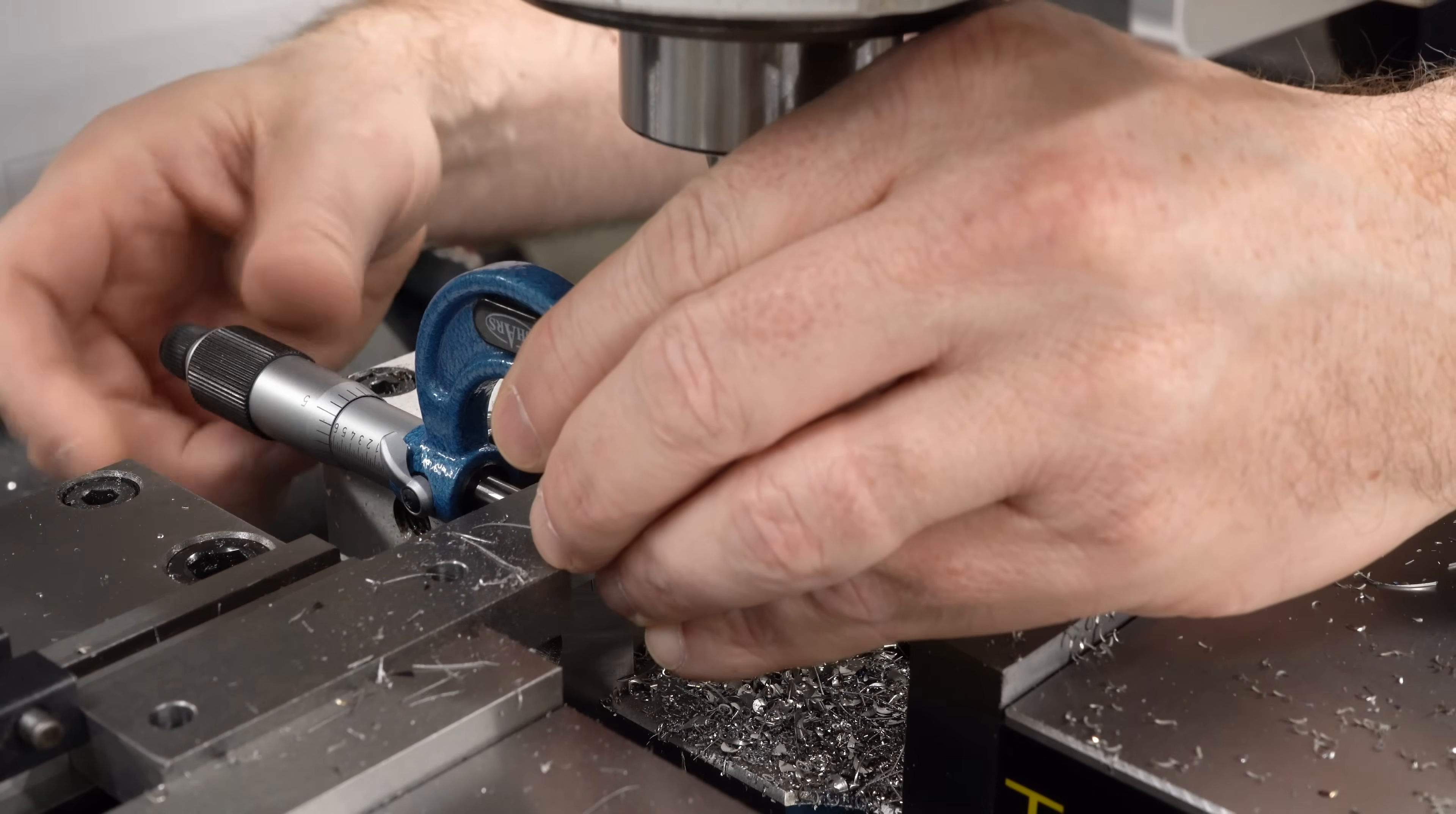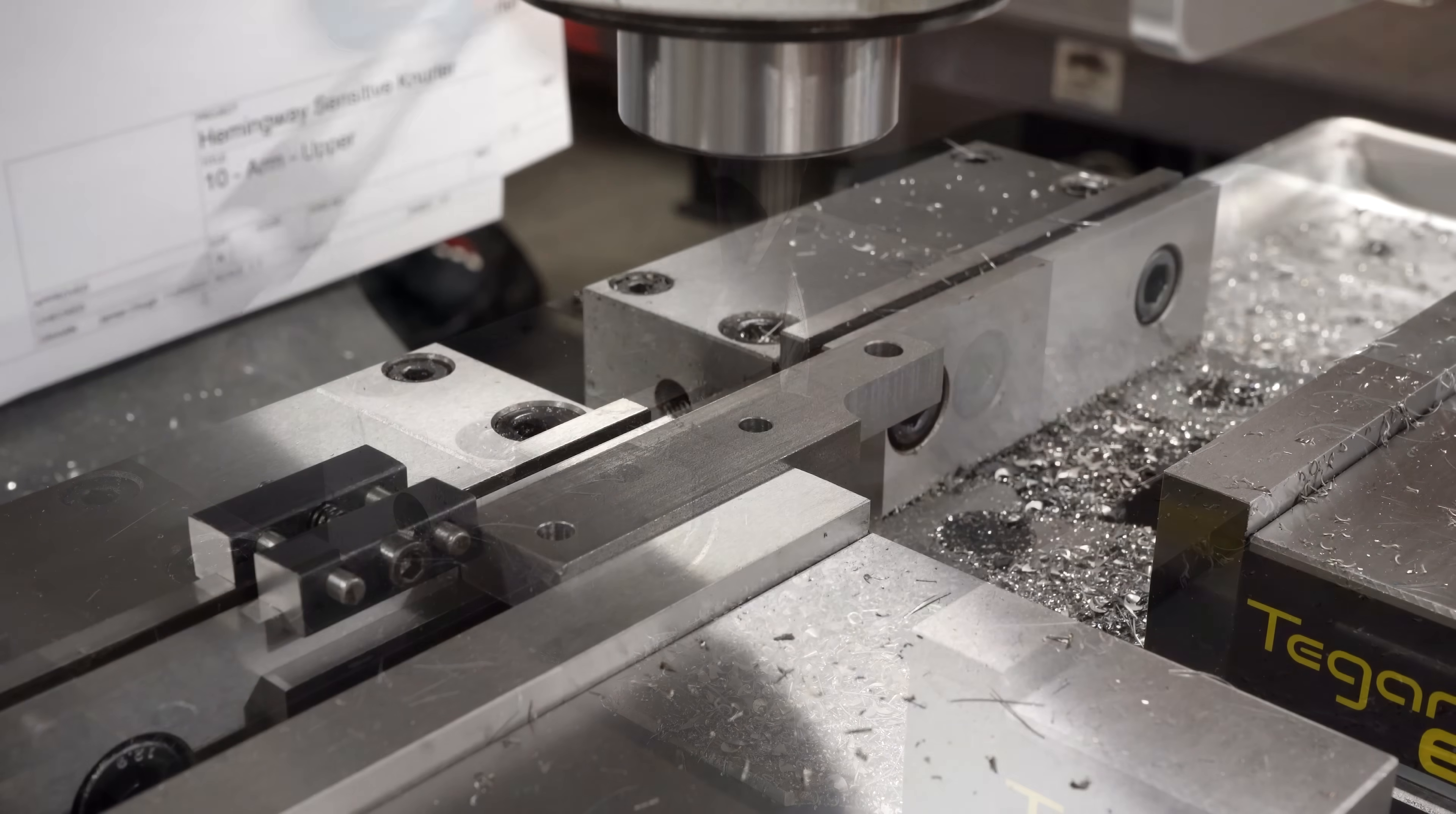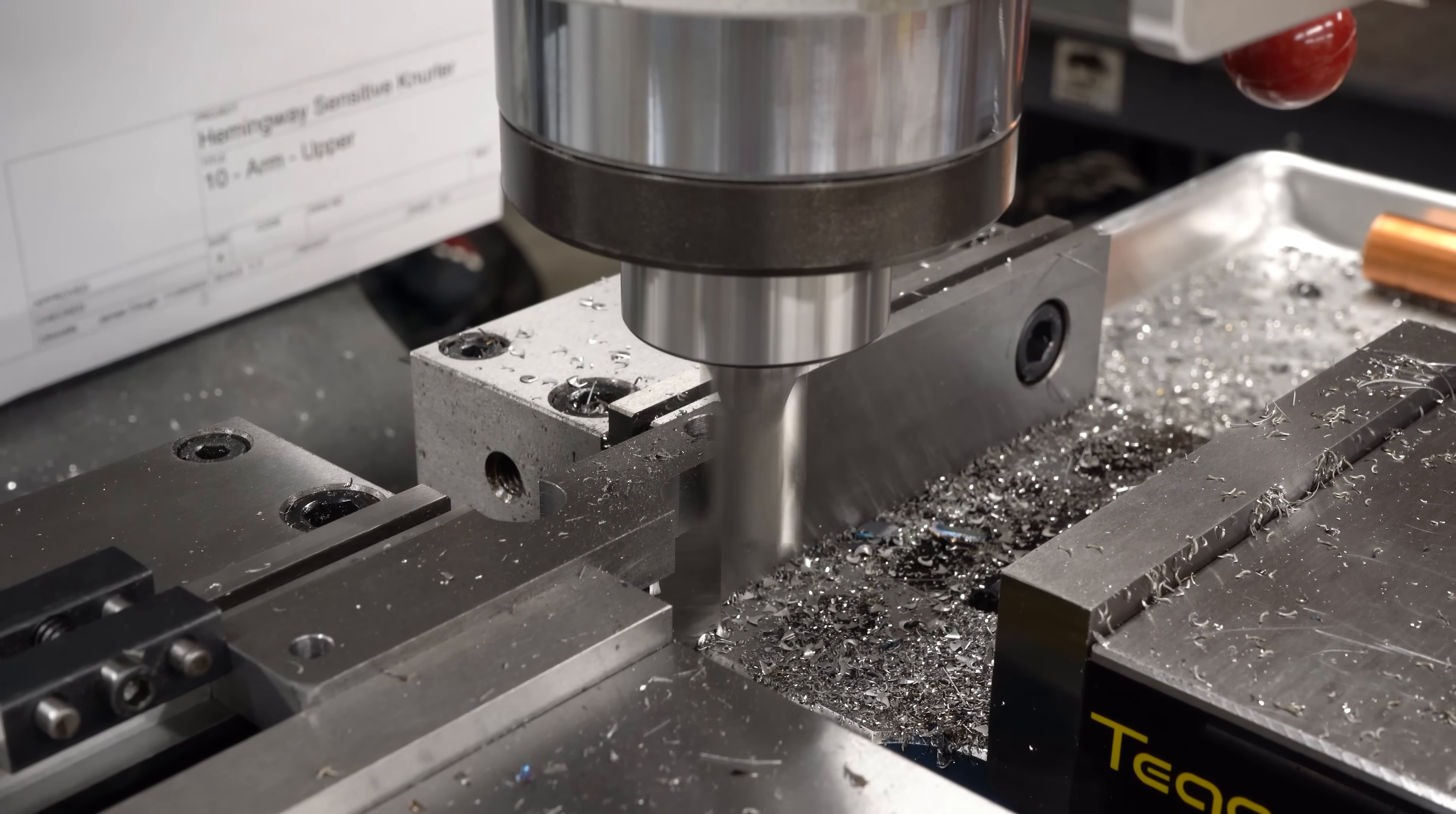See how we did? This should be 625 thou, and yeah we're right on there. A couple tenths over, I'll take it. Now we just have one more part to do and that should be easy. I can just pull this one out, put the other one in up against the stop, and make the same cuts.